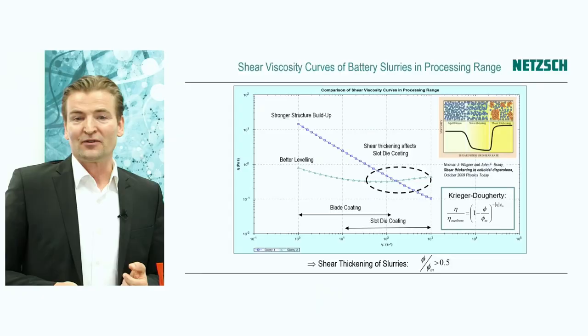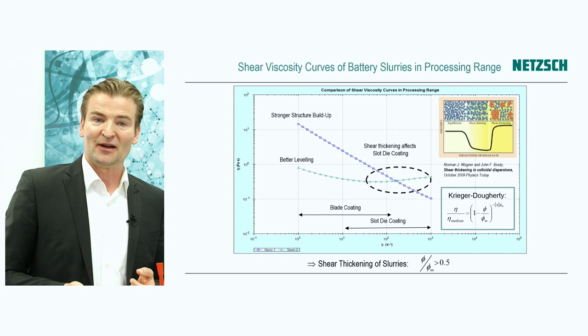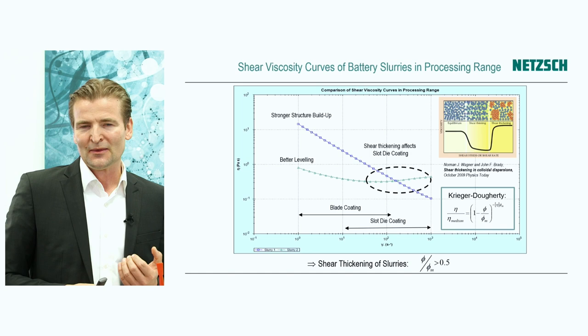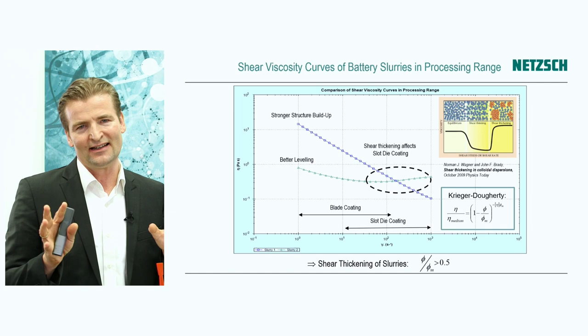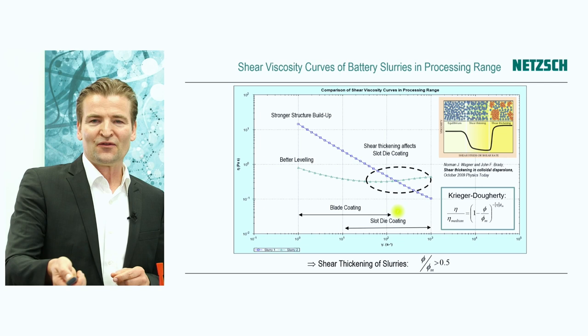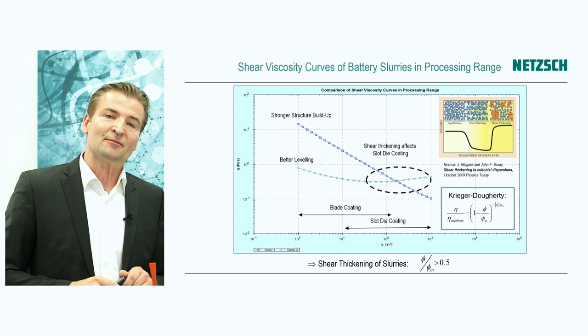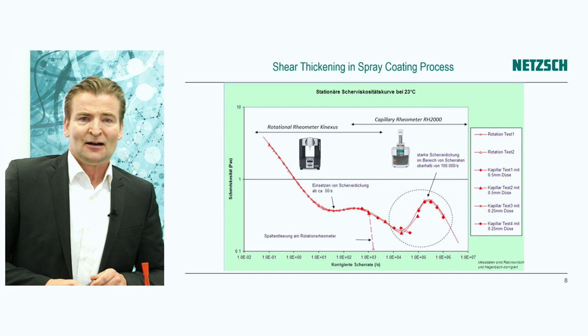Shear thickening especially needs to be avoided. It always occurs at high volume fractions of particles and is a phase transition under shear flow. When the volume fraction of particles exceeds about 50% of the maximum volume fraction, you typically see the onset of shear thickening. People in the battery industry try to avoid this by changing the formulation — adjusting the particle size distribution and shape of the active particles.